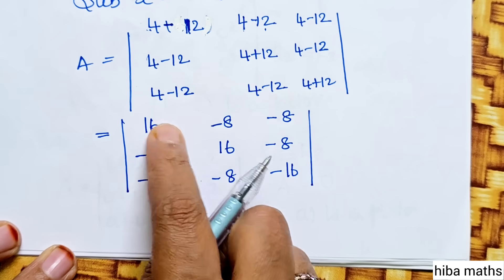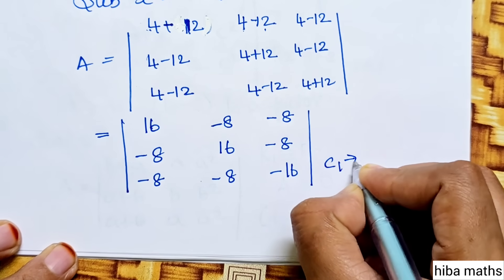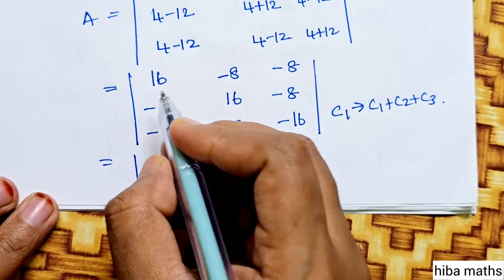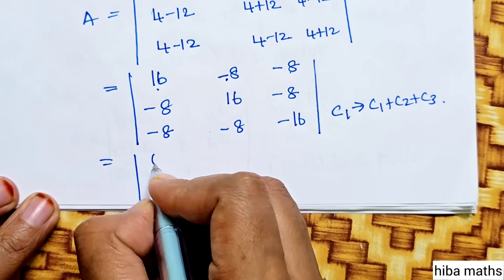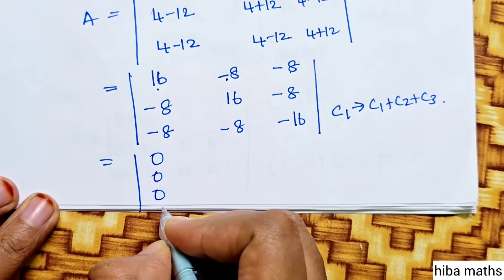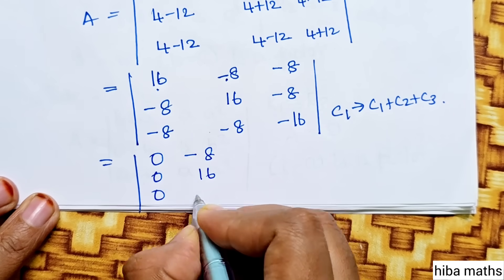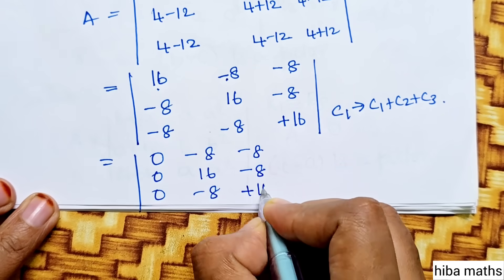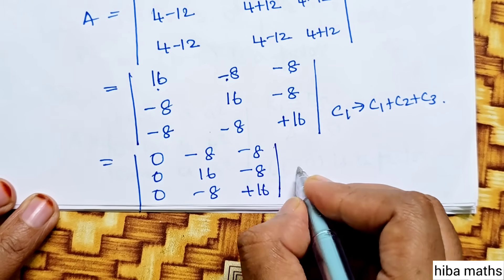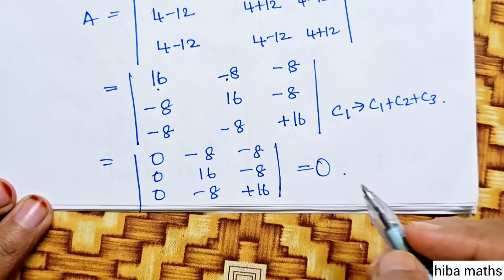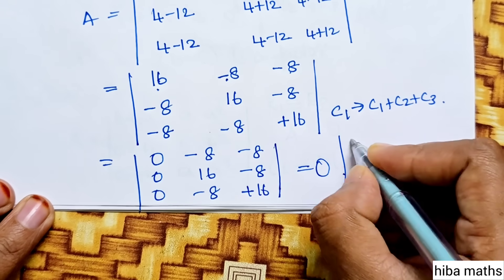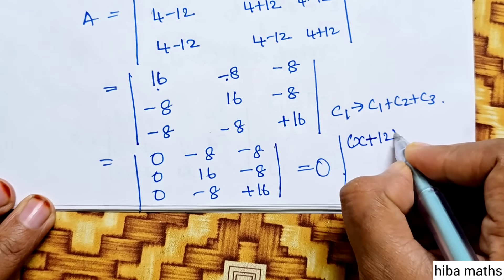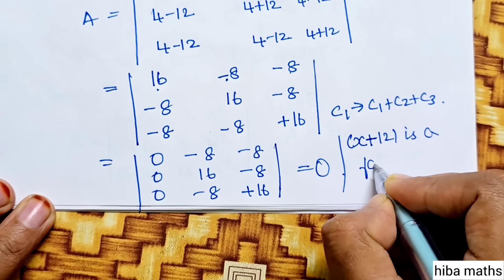Now using row and column operation, C1 becomes C1 plus C2 plus C3. The answer: 16 minus 8 is 8, and 8 minus 8 is 0, so C1 is full zero. The value equals 0, so when x equals minus 12, then x plus 12 is a factor.